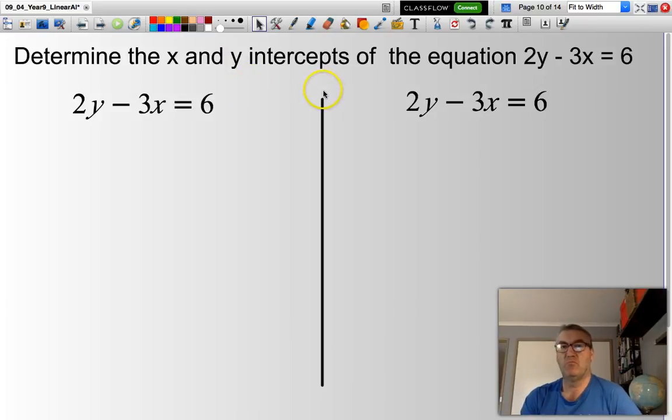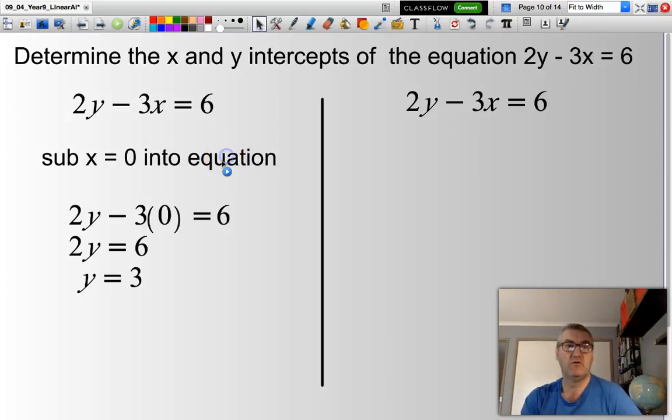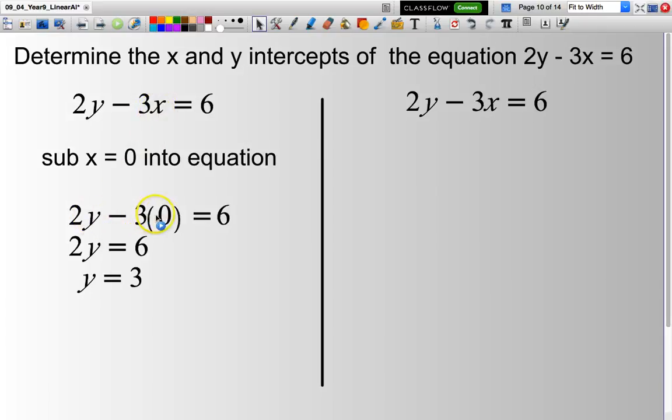Divide my page into 2, left-hand side, substitute x = 0 into the equation. So, I take that 0 and put it there. So, I end up with 2y - 3(0) = 6. This becomes 0. So, 2y = 6. Divide both sides by 2 gives me y = 3. First intercept point, (0, 3).